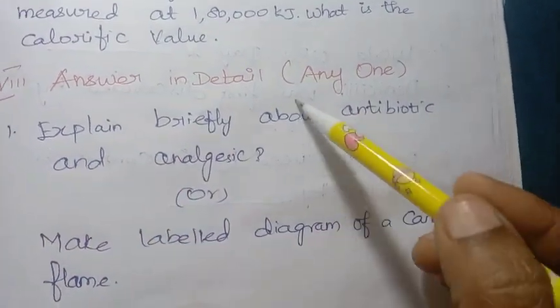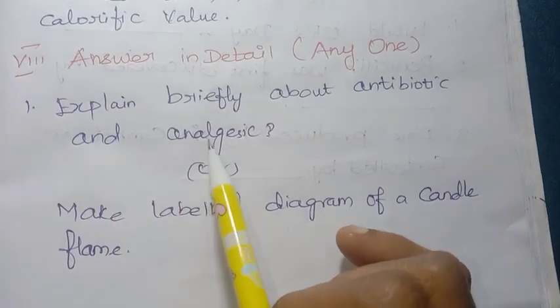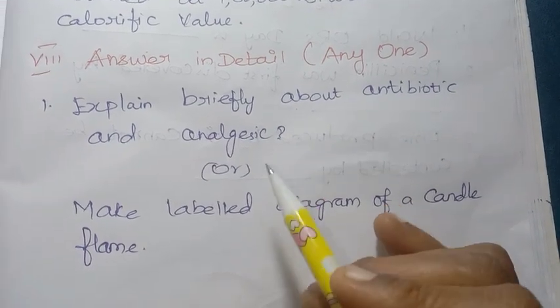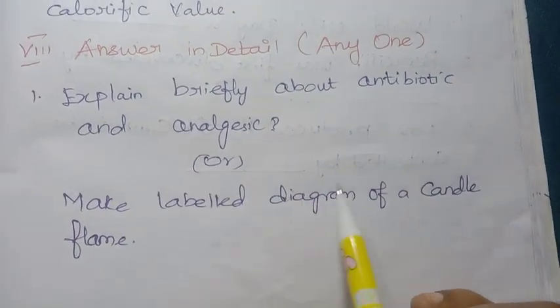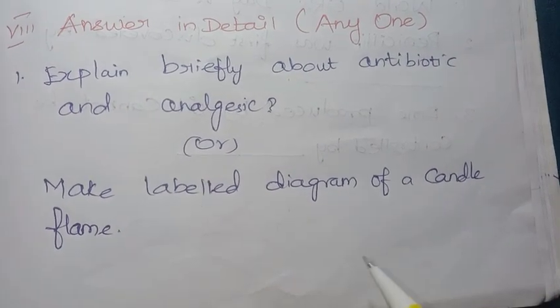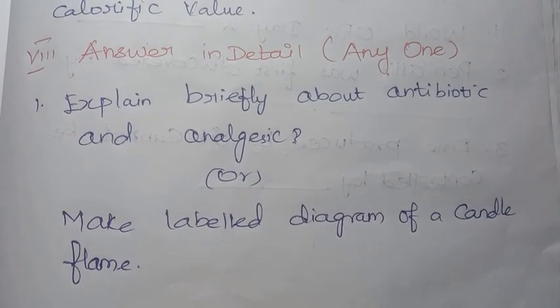Roman numeral eight: answer in detail, any one. So write in detail any one question. First: explain briefly about antibiotic and analgesic. Second option: make a labeled diagram of a candle flame. This is from the 2020 question paper - candle flame labeled diagram.